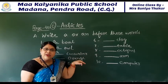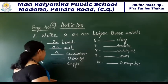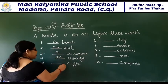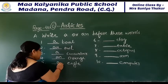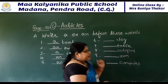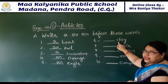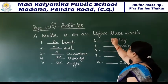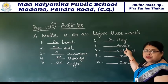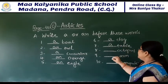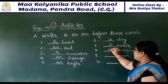There is 'orange' - O is here, so what will you call? AN. There is 'eagle' - again a vowel, so AN. There is 'dog' - D is your consonant, so what will you call? A dog. There is 'table' - A table. There is 'octopus' - AN octopus.